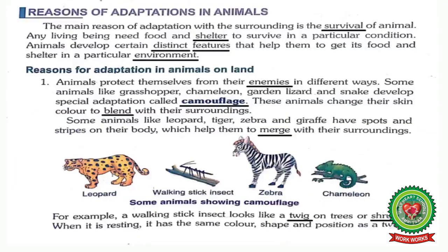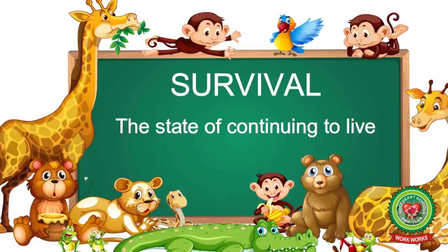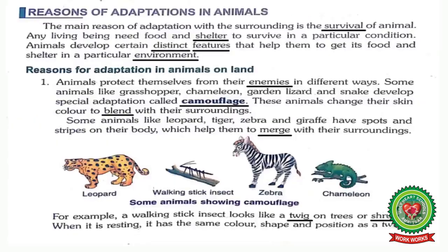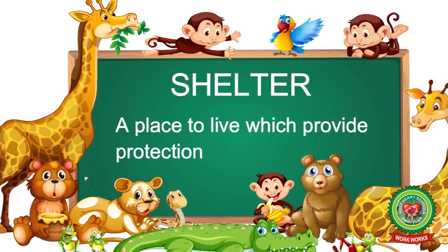Let's start our reading from the topic reasons of adaptation in animals. The main reason of adaptation with the surrounding is the survival of animal. Underline the word 'survival' and write down its meaning: the state of continuing to live. So students, animals undergo adaptation in order to survive in a particular area. Any living being needs food and shelter to survive. Underline the word 'shelter' and write down its meaning: a place to live which provides protection.